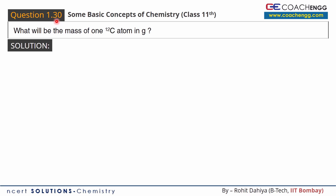Hello friends, I will now discuss question number 30 of the chapter 'Some Basic Concepts of Chemistry.' What will be the mass of one carbon atom in grams? We have to express one carbon atom's mass in grams. Carbon-12 is given — it's quite a straightforward problem.